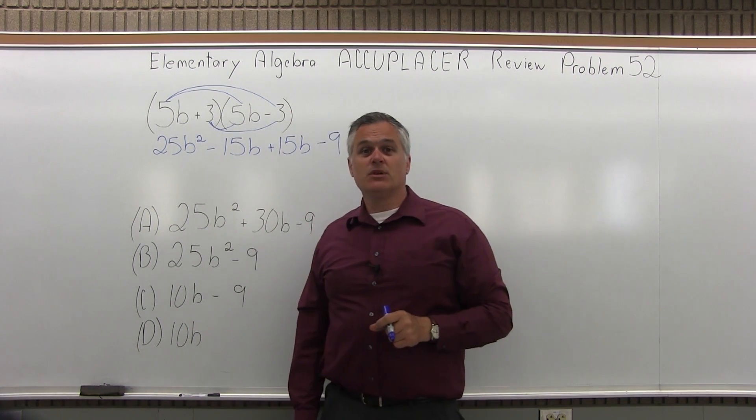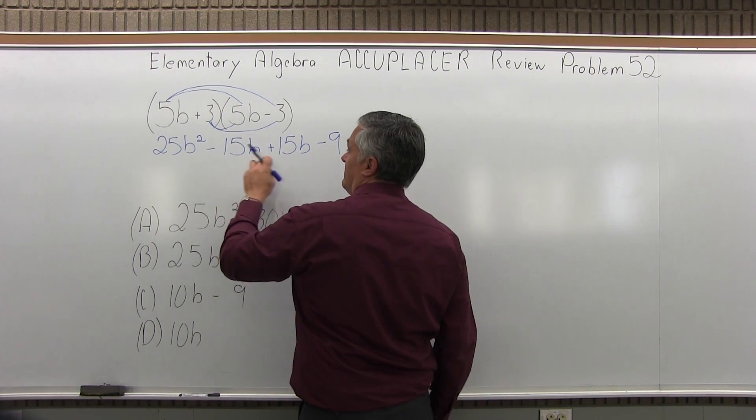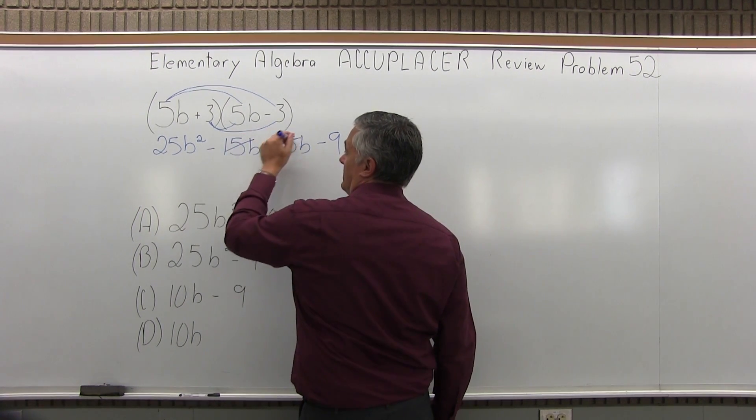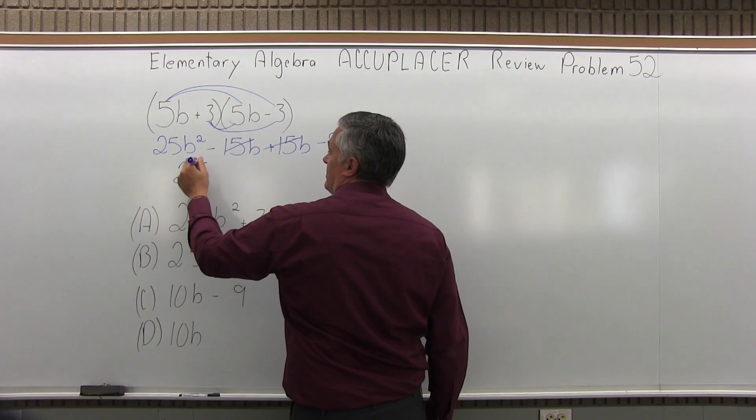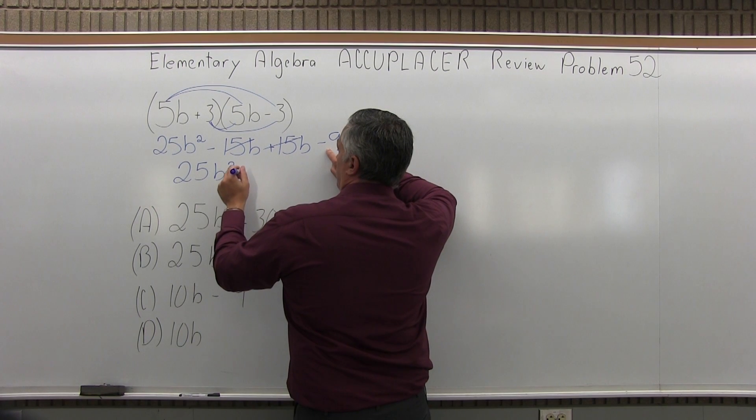Now, the two pieces in the middle combine very nicely. They cancel, actually. Negative 15B, positive 15B. So after you simplify, you're left with 25B² minus 9.